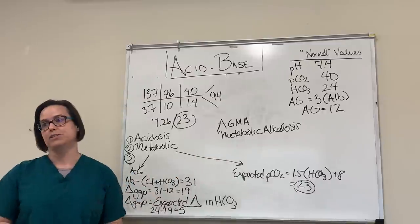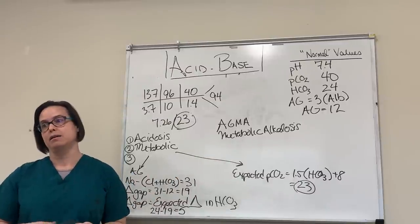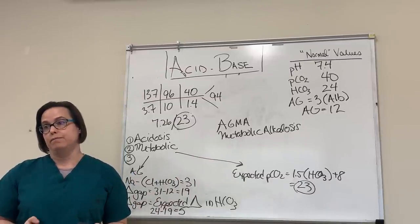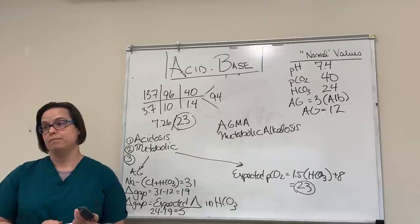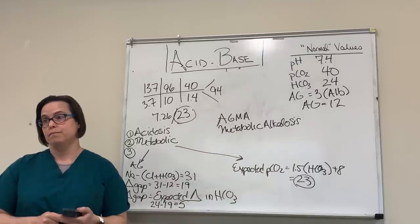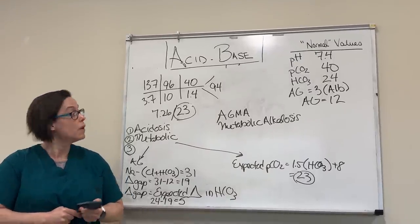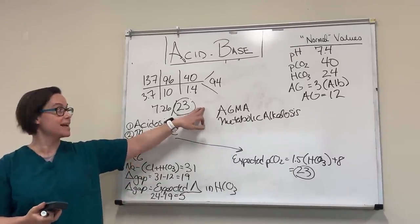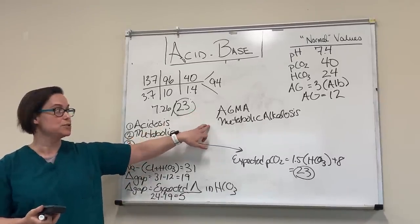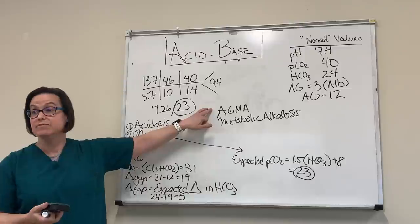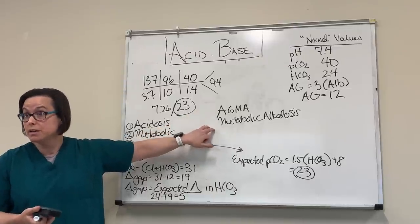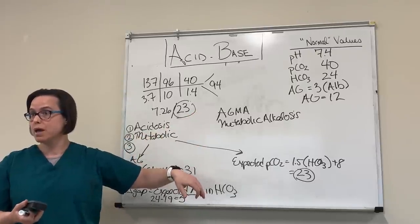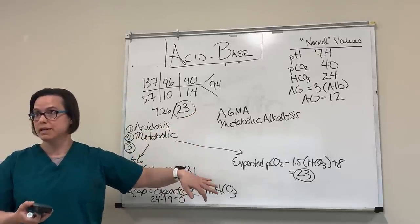Make up a story about why your patient has an anion gap metabolic acidosis and a metabolic alkalosis. They could be septic with a lactic acidosis and have an NG tube, or they could have DKA and be dehydrated — so a contraction alkalosis on top of their acidosis.